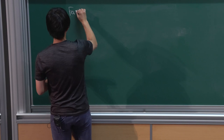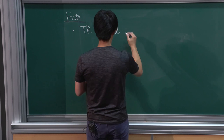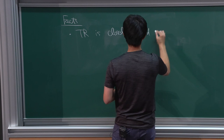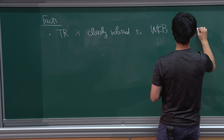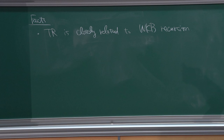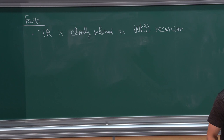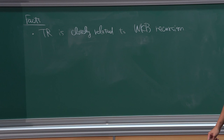The first fact is: topological recursion is closely related to WKB recursion. Topological recursion can be regarded as one way to quantize the spectral curve. For example, the input — the Weber spectral curve — is the classical limit of the Weber equation. The topological recursion is closely related to the recursion relation which determines the higher-order coefficients of the WKB solutions, and we can write down some explicit relation.